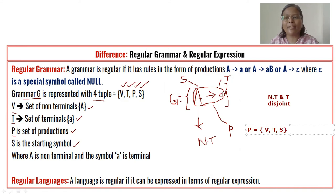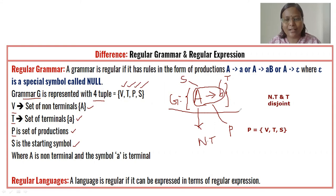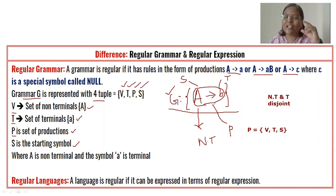A regular language can be expressed in terms of regular expressions. How to represent regular expressions, how to write a regular grammar, and how to write a regular language will be covered in the next video. As a recap: when looking at a given production set, if we see the form non-terminal produces terminal, or non-terminal produces terminal followed by non-terminal, either of these forms — or a combination — qualifies as regular grammar.